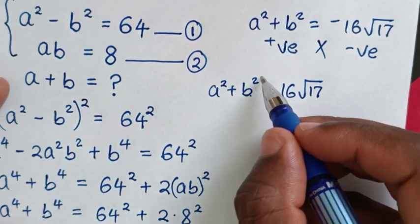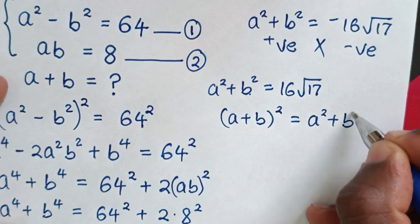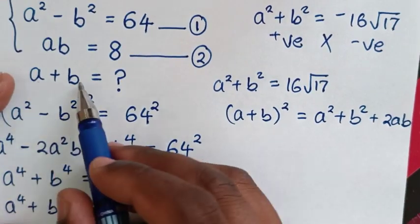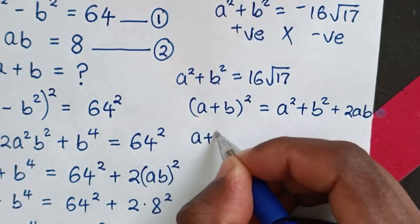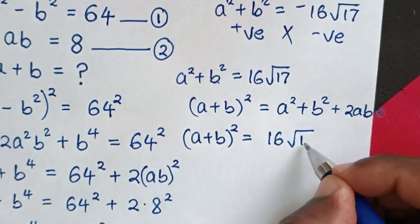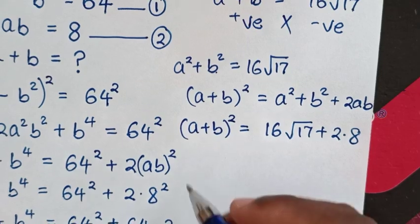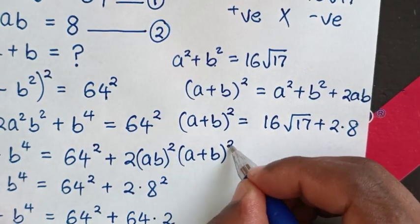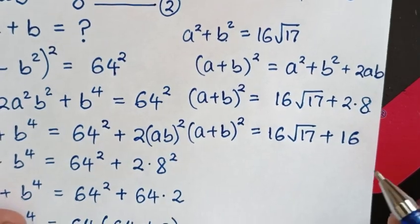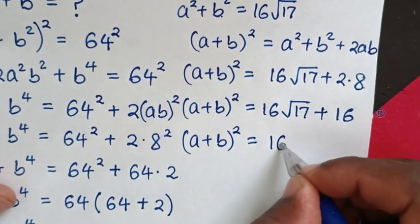To find a plus b, we apply the bracket rule: a plus b bracket squared equals a squared plus b squared plus 2ab. So a plus b bracket squared equals 16 root 17 plus 2 times ab, where ab equals 8 from equation 2. This gives 16 root 17 plus 16. Taking 16 as a common factor out of the bracket.